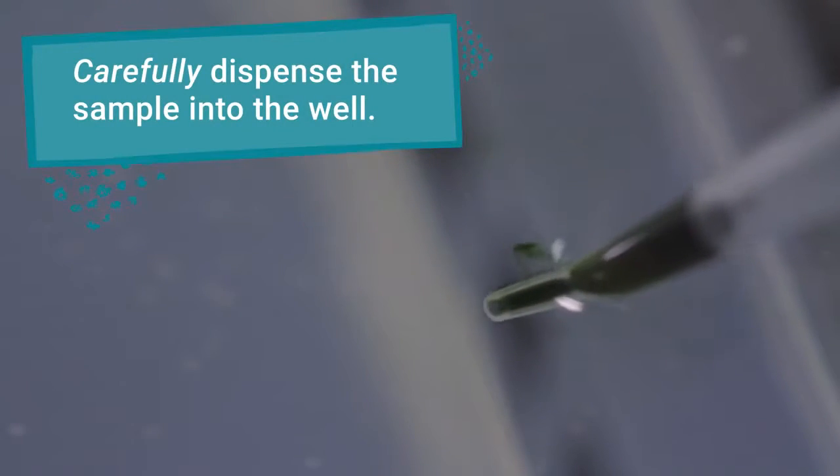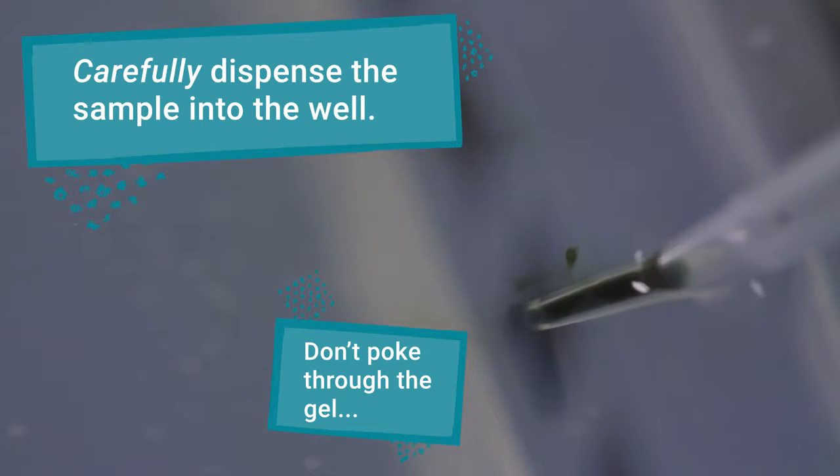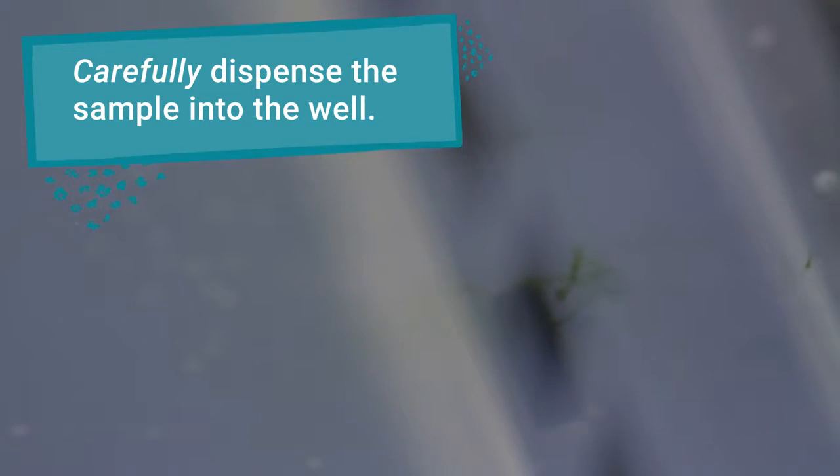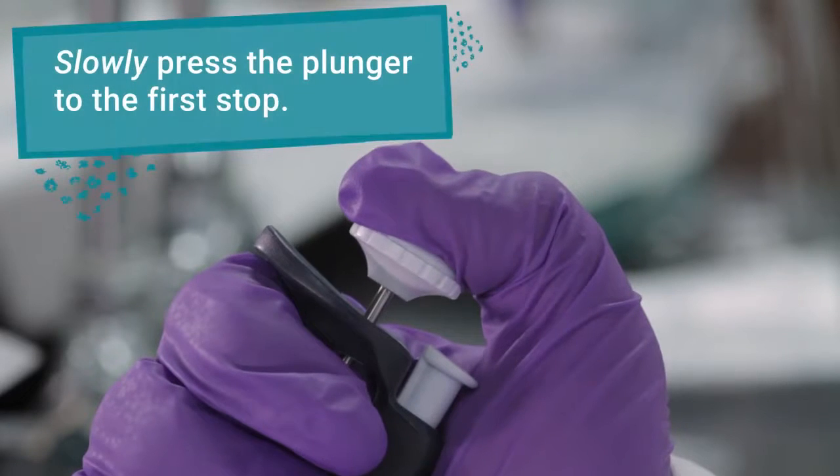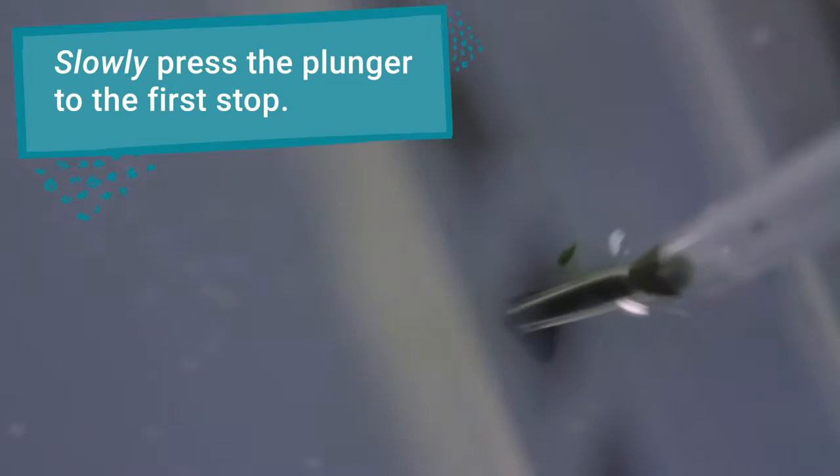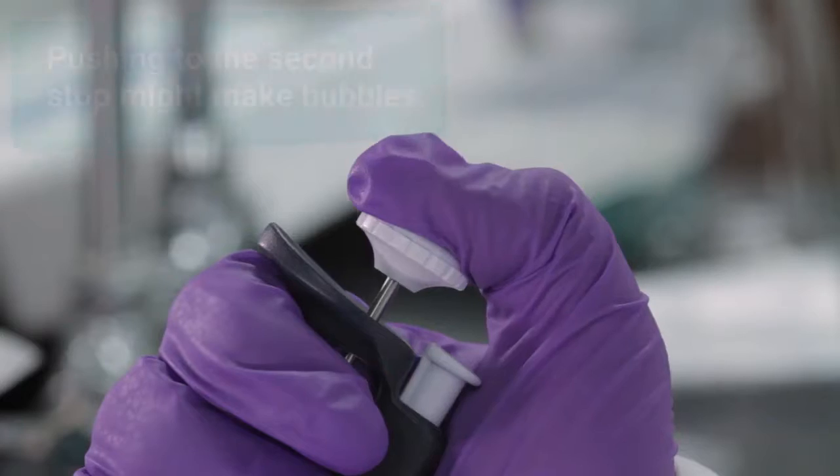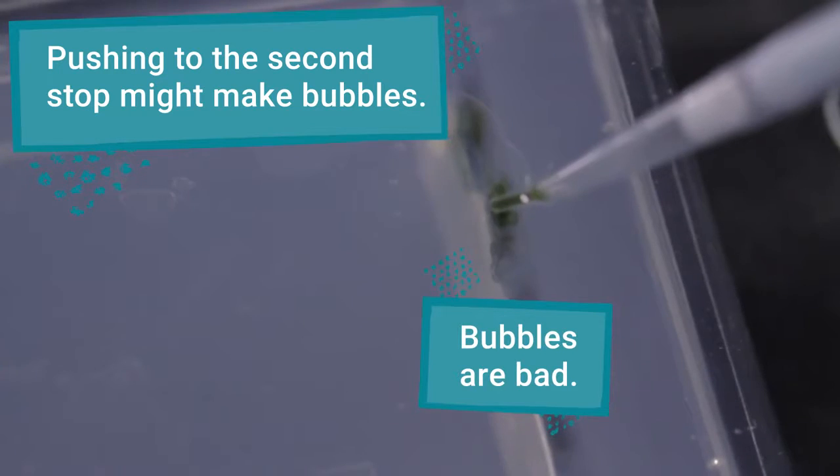Carefully insert your pipette tip into the well that corresponds to your sample. Make sure you don't poke into the bottom of the gel or leave the tip floating above the well. Slowly push the plunger to the first stop to fully dispense the sample into the well. Going to the second stop can introduce bubbles, which can push your sample out of the well.